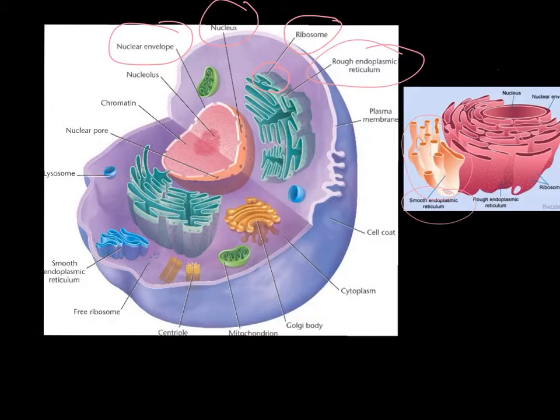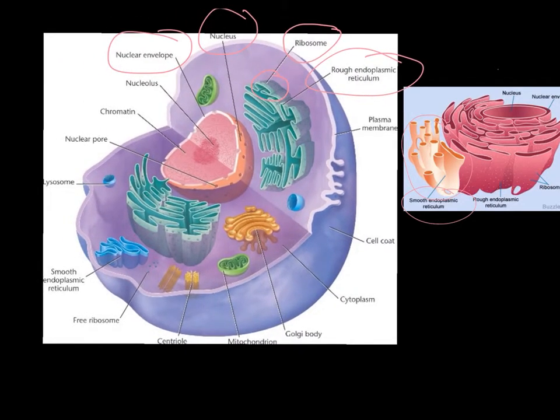The Golgi apparatus right here is known as a packaging department where chemicals either exit out of the cell or can be used inside of the cell.